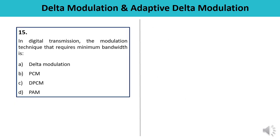Question 15: In digital transmission, the modulation technique that requires minimum bandwidth is — Delta Modulation, PCM, DPCM, or PAM? The technique which uses minimum bandwidth is Delta Modulation. So the answer is A.